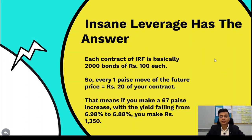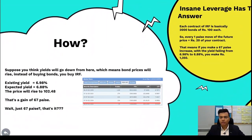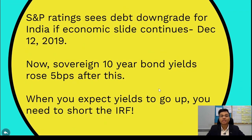Let's look at another scenario. On December 12th, 2019, S&P came out with a report: 'S&P ratings sees debt downgrade for India if economic slide continues.' Immediately after this report, sovereign bond yields went up by 5 basis points. In such cases where you expect yields to go up, you should short the interest rate futures. But remember, this is an insanely leveraged product and the risk is insanely high.